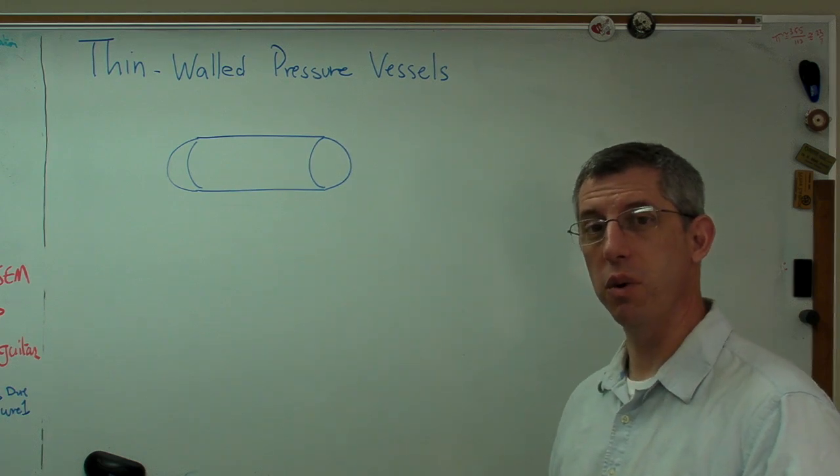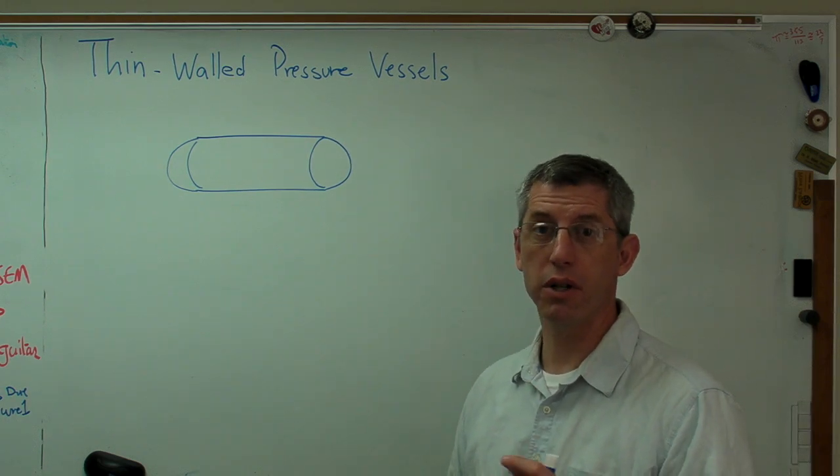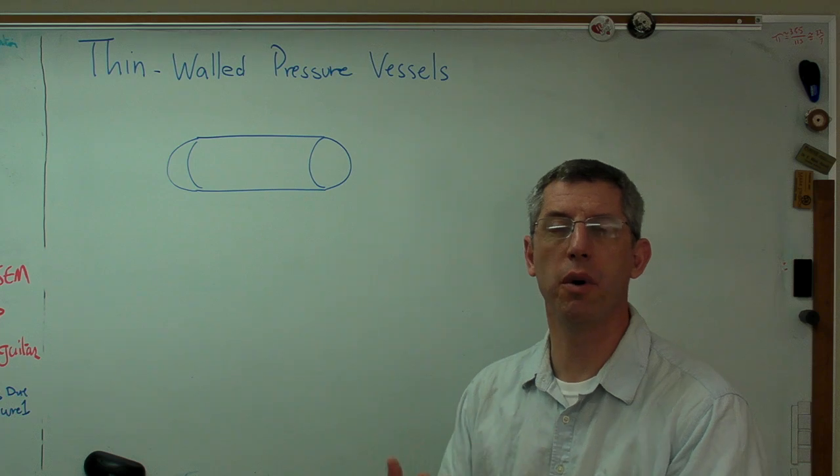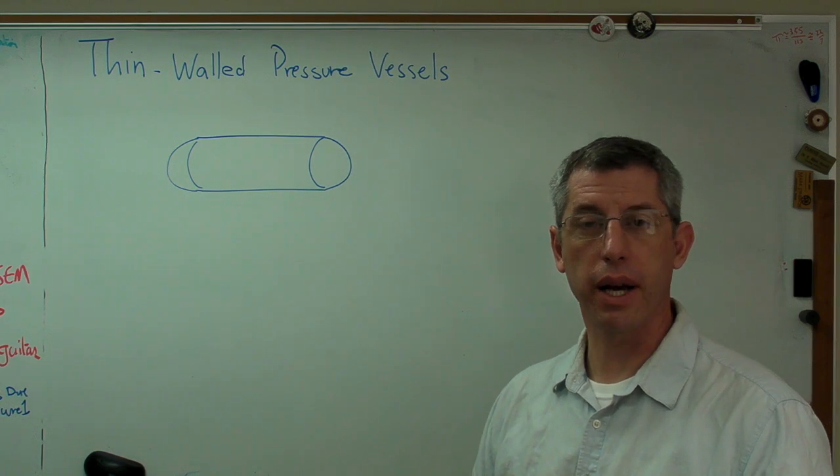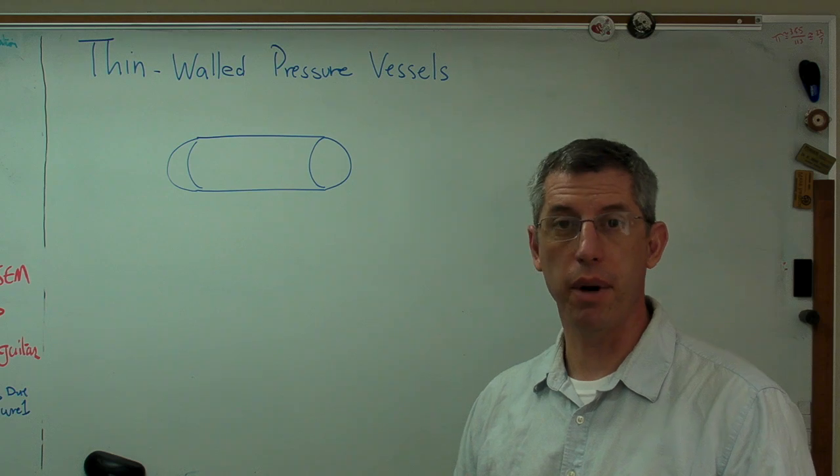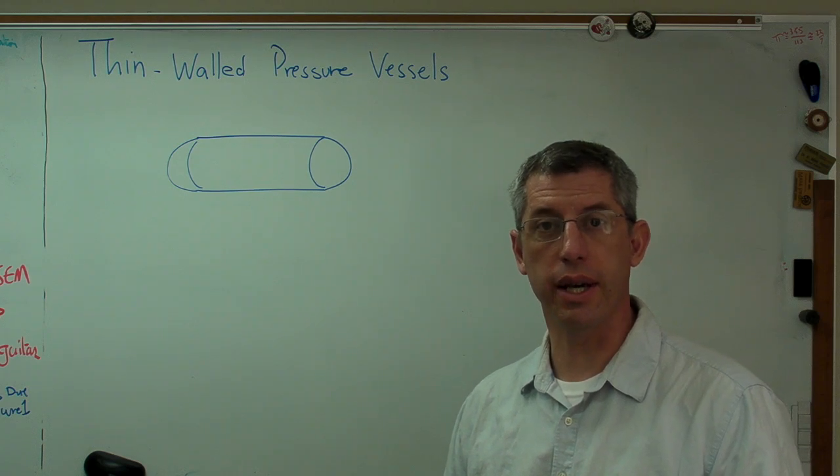A thick-walled pressure vessel is one where the wall thickness is large compared to the diameter, or not small perhaps. Think of like a hydraulic cylinder or a cannon barrel. If you're ever in a museum and you see like a tank.